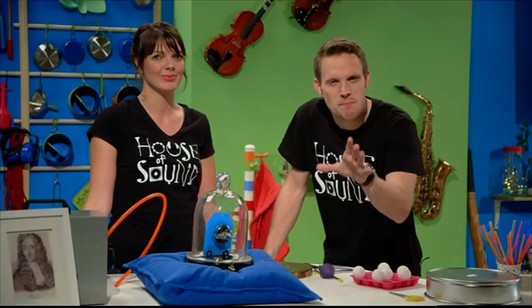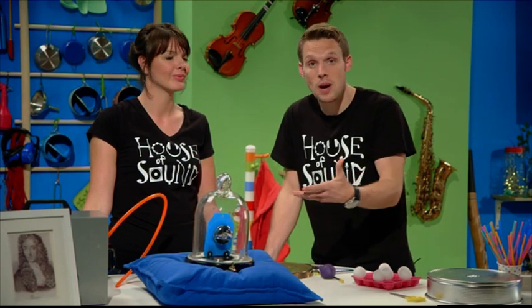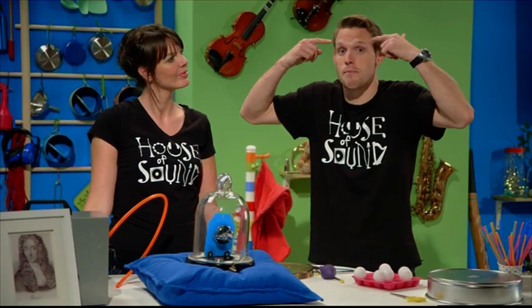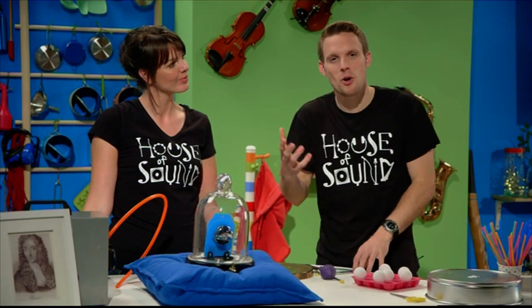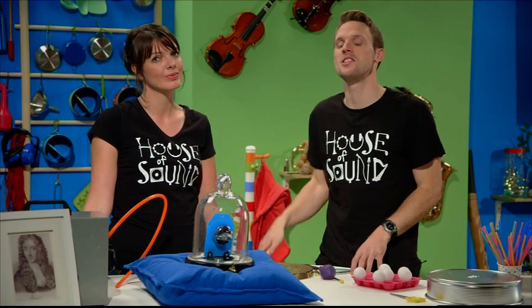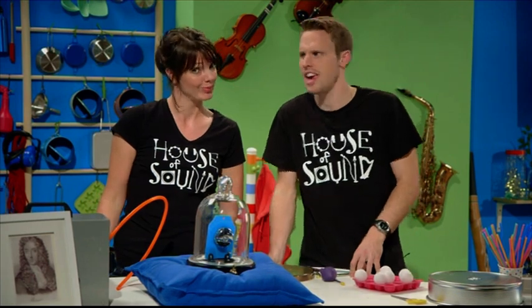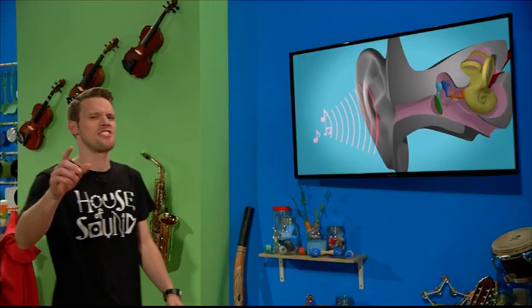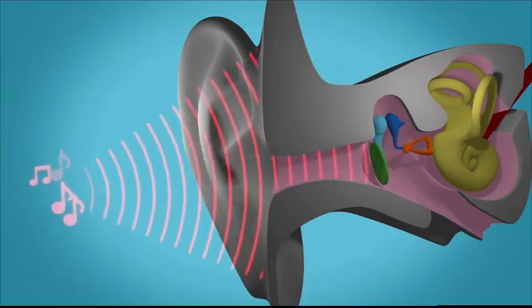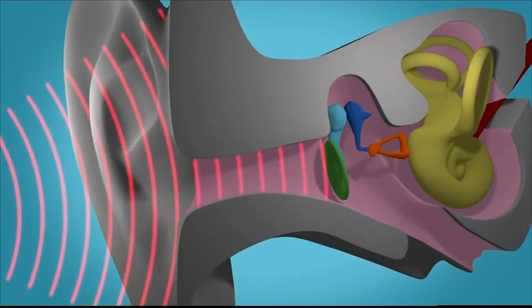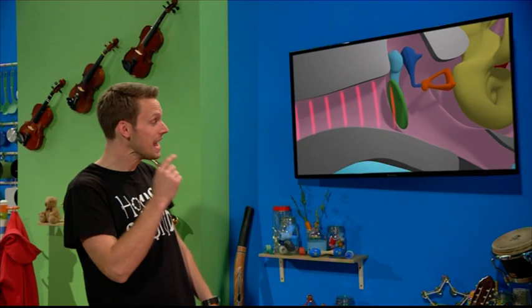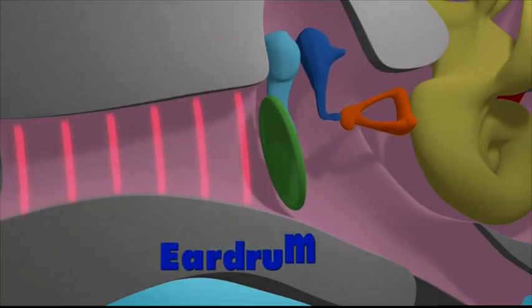So sound needs a medium to travel through. And to be heard, sound waves need to reach some ears and a brain. Sound waves are collected by your outer ear and travel down your ear canal. When those vibrating air particles hit your eardrum, it starts to vibrate too.